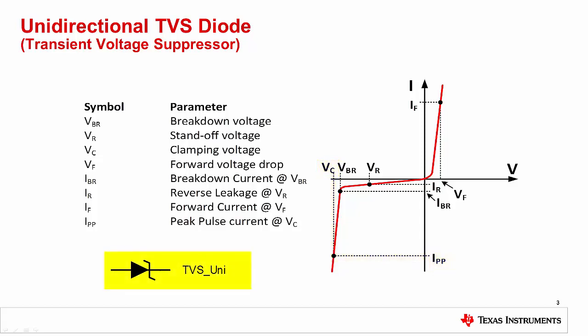If you look at the symbol for the TVS diode on the bottom left, you will see that it is a unidirectional device — a single diode with a forward and reverse direction. When in forward operation, the device has a very low forward drop of approximately 0.7 volts, and when in reverse operation, the diode has a drop approximately equal to the breakdown voltage. This type of TVS diode is useful if the normal operating voltage range is from 0 volts to standoff voltage. For example, a unidirectional TVS diode would be useful for protecting a 15-volt power supply, where the standoff voltage would be set to 15 volts. The TVS diode would remain off from 0 volts to 15 volts, but would trigger on to protect against fault voltages above 15 volts or below 0 volts.